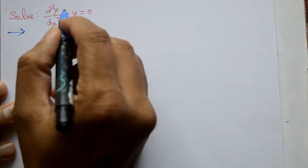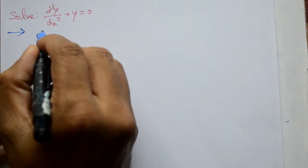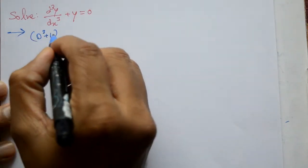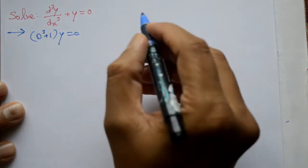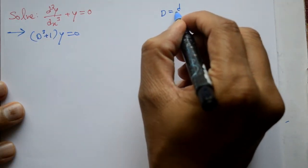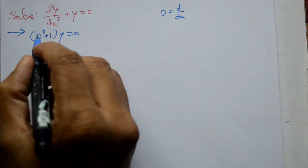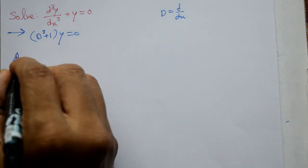Now, solution. This equation ko ham is thera likhenge. So, (D³ + 1)y = 0. Capital D kai? D stand d by dx e there. This ka pa kya karenge? Auxiliary equation likhenge.